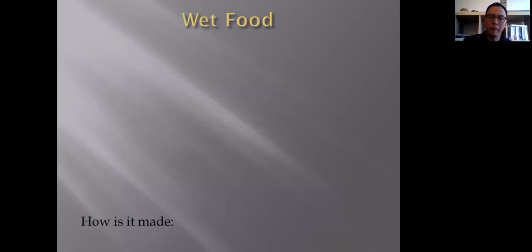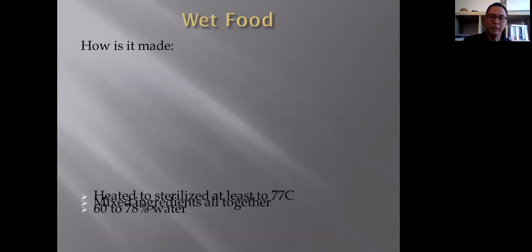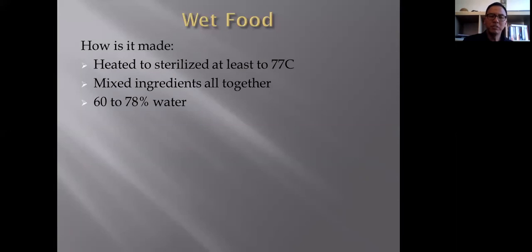Let's talk a little about wet food. How is it made? Similarly, the ingredients are all meshed together and heated to sterilize, which means at least 77 degrees celsius. Then mix all the ingredients together, and it's usually 60 to 78 percent water.